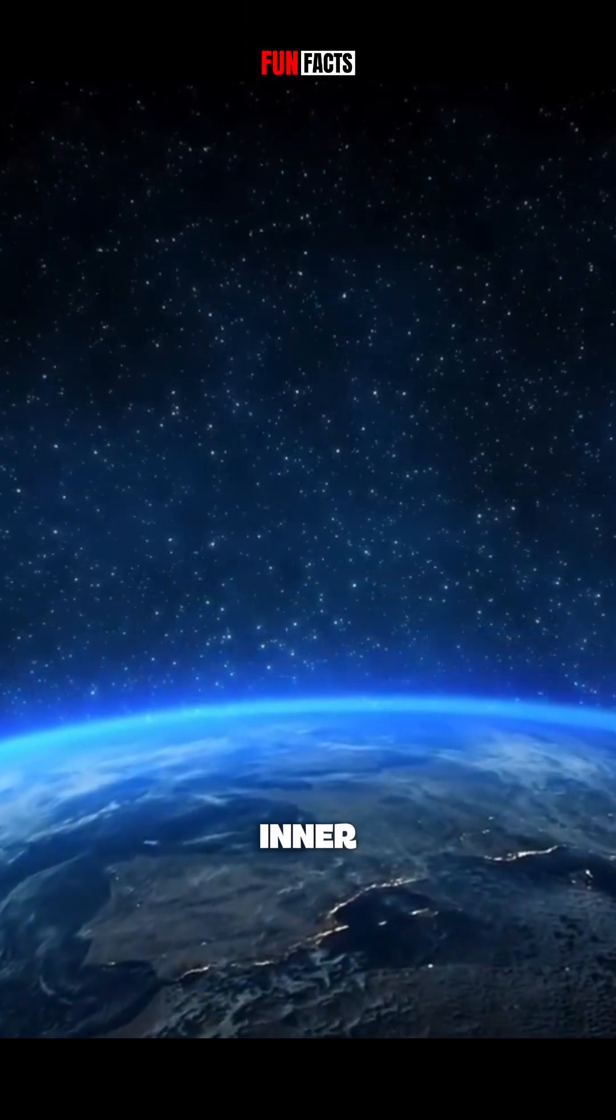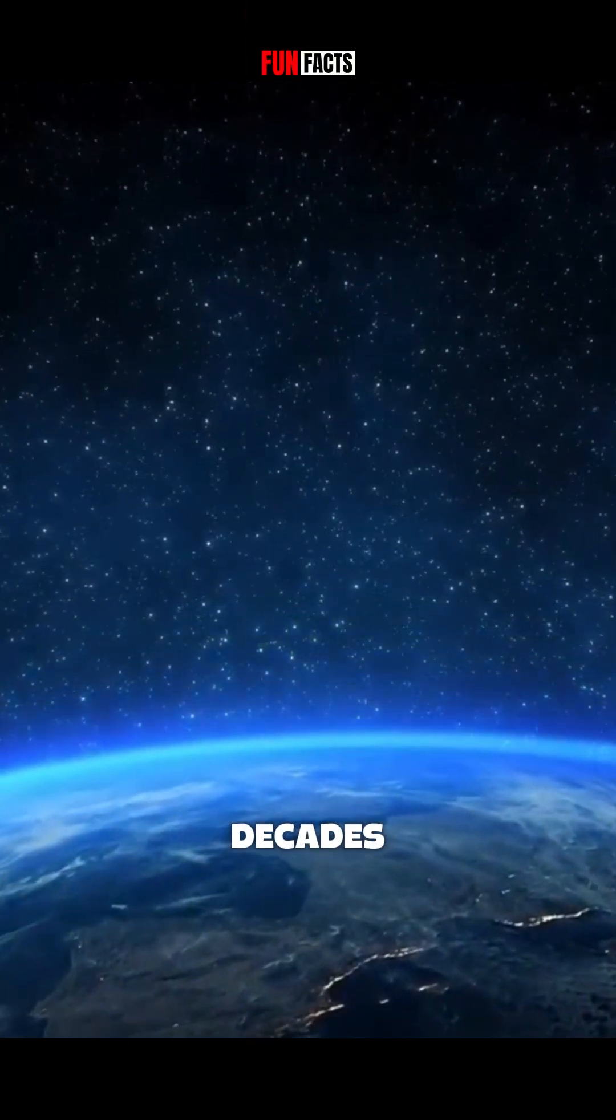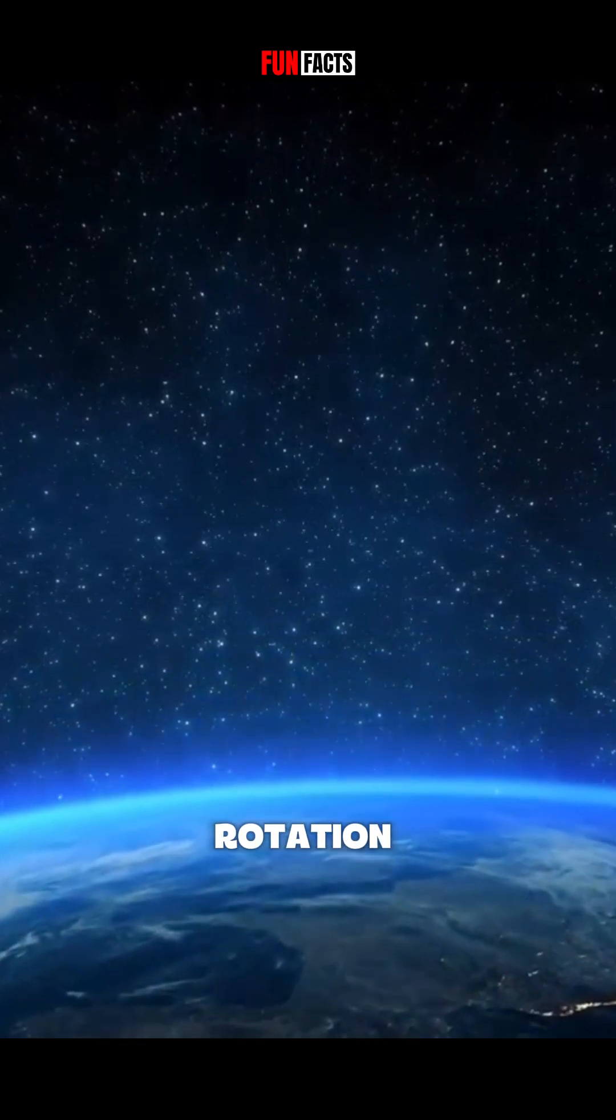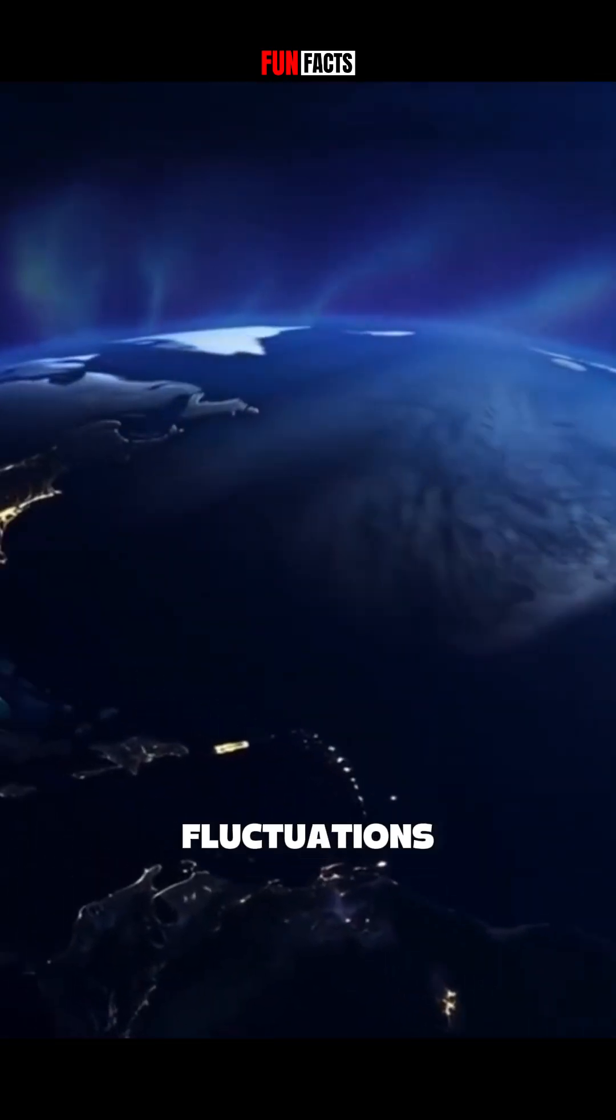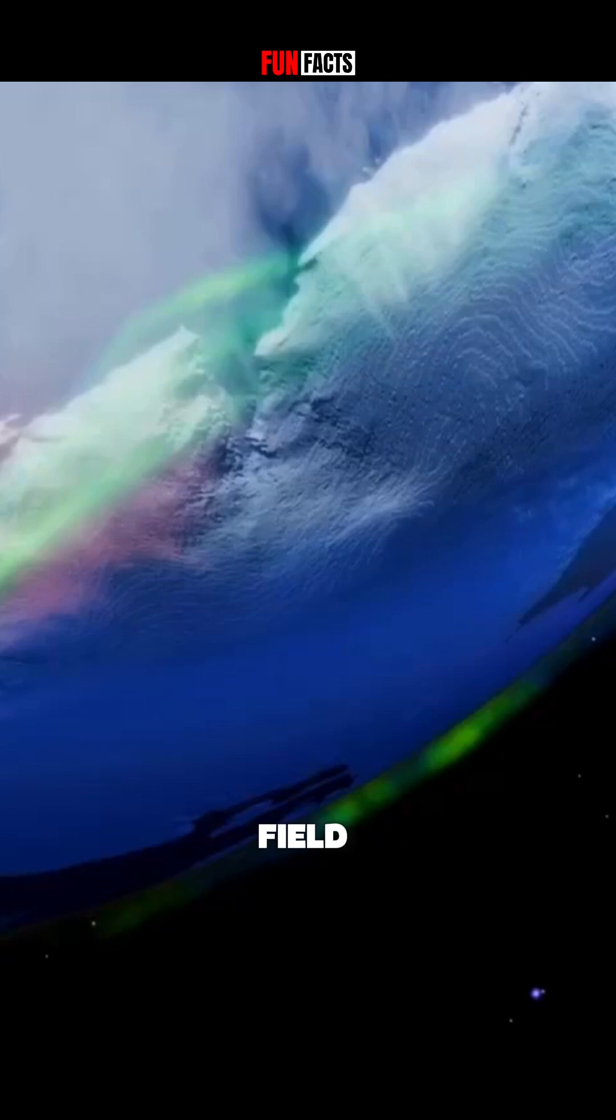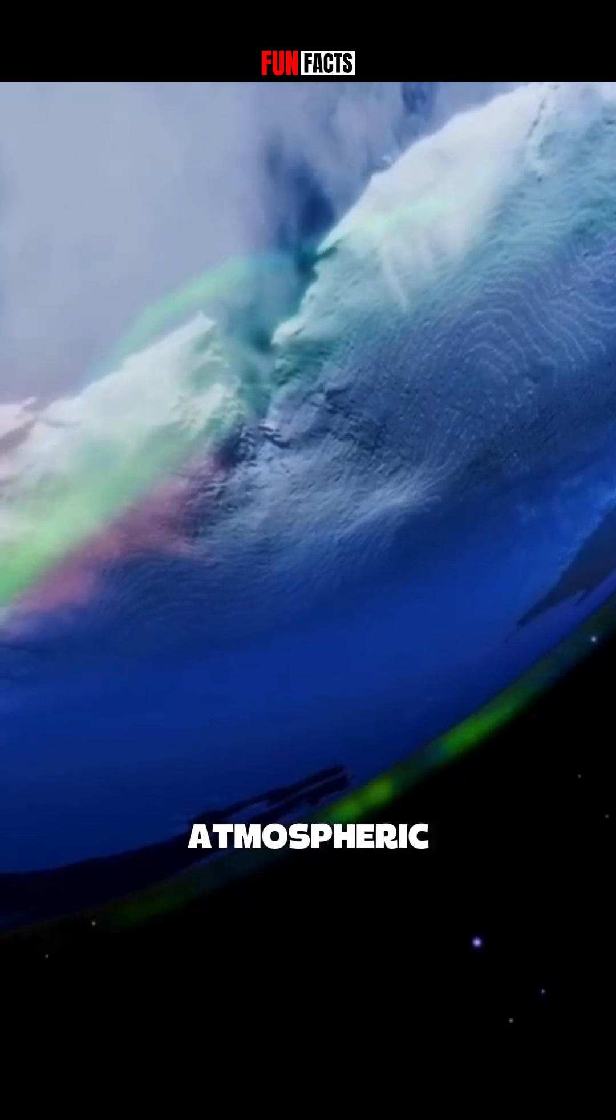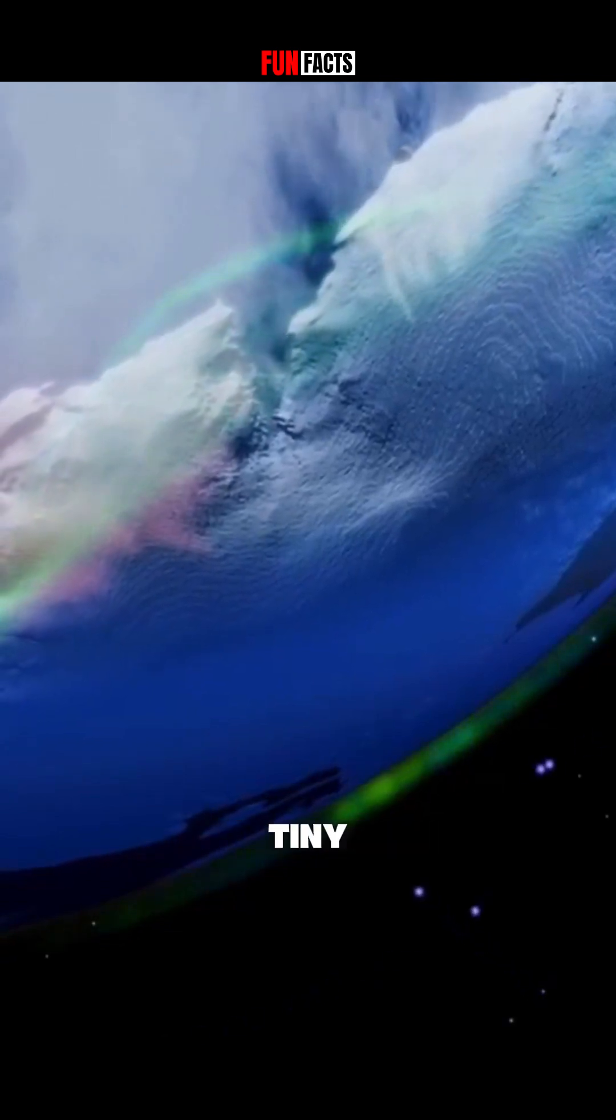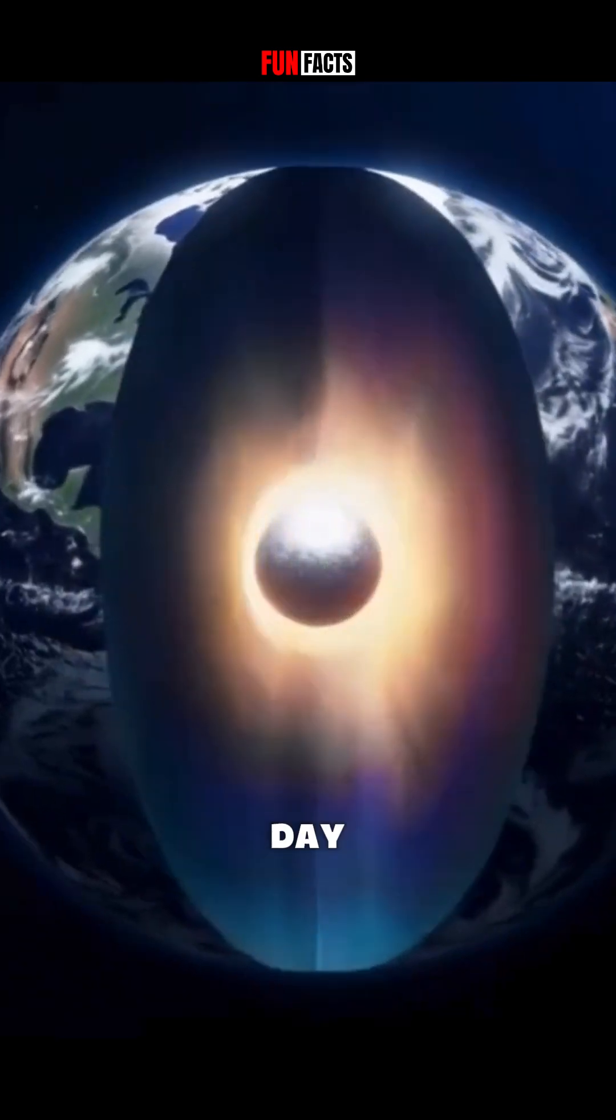Scientists now believe Earth's inner core might be entering a decades-long phase of reverse rotation. This could be tied to fluctuations in Earth's magnetic field, to changes in atmospheric circulation, and to tiny but measurable shifts in day length.